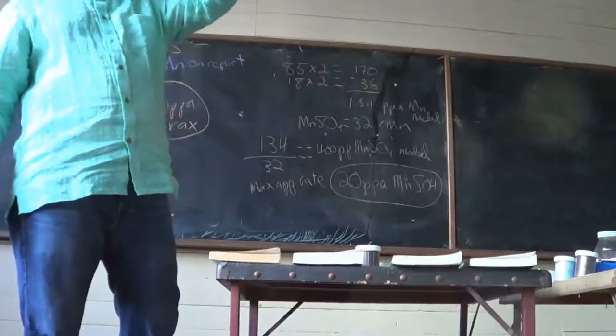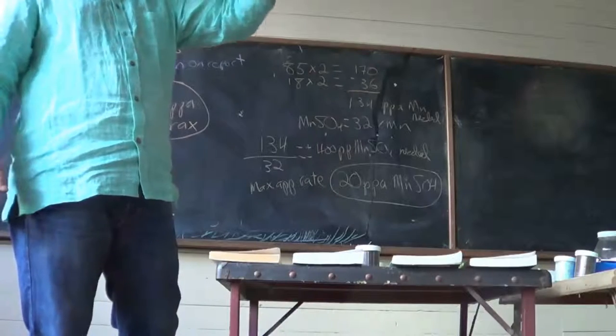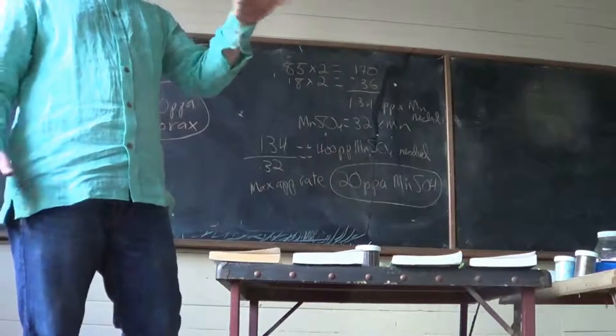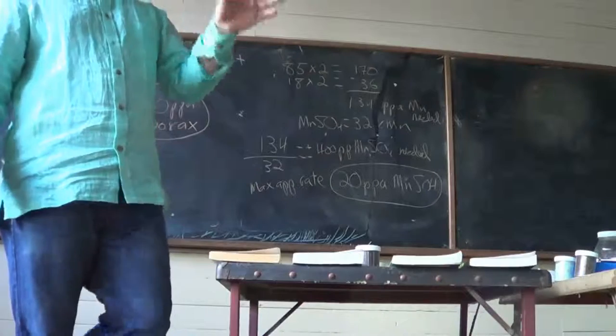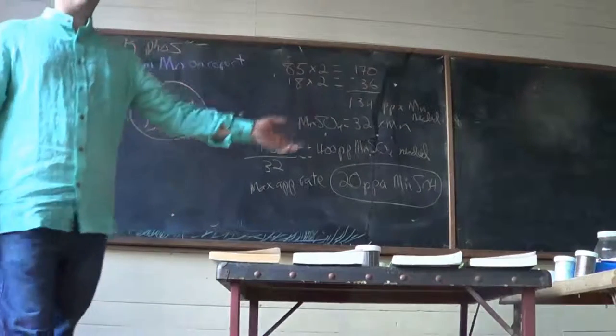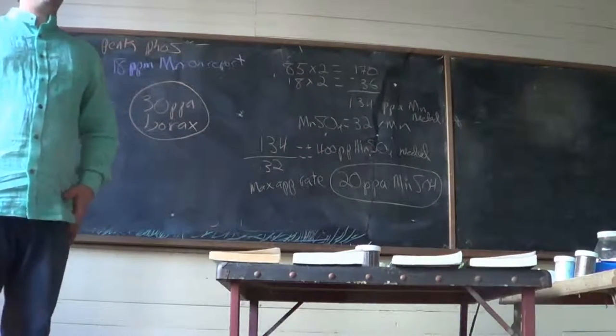So you can kind of ignore that section because the section right above it has it down in pounds per acre. So they've already figured that out for you and worried about it, so you can pretty much ignore it. If you want to go deeper into it, feel free. Not confused enough as it is.